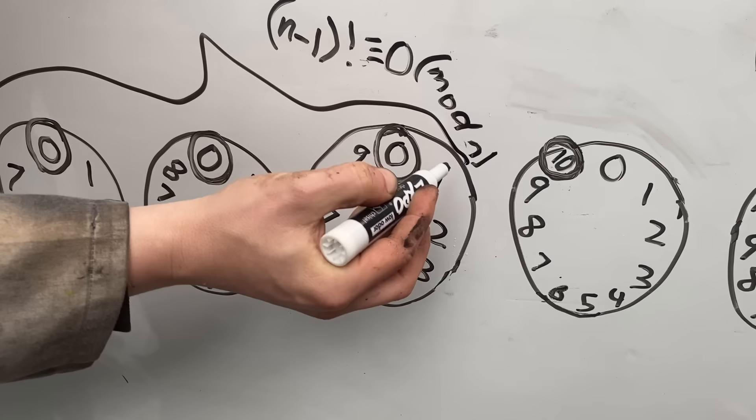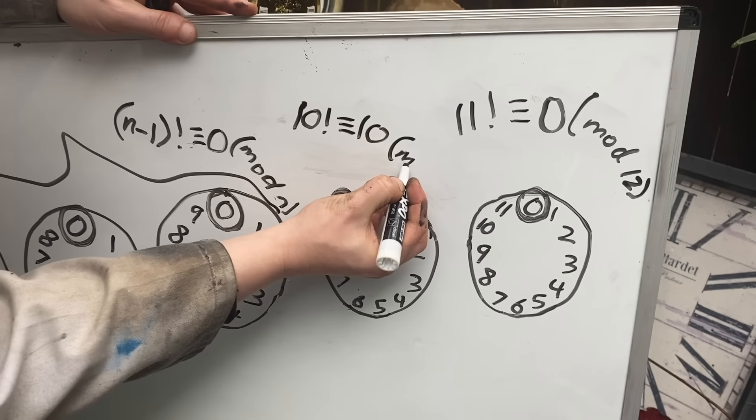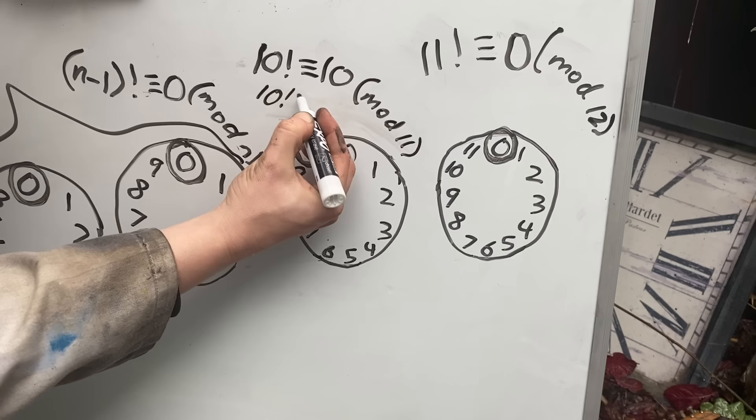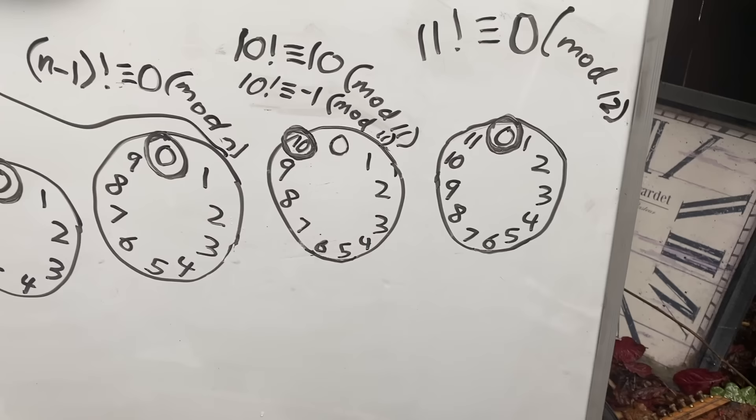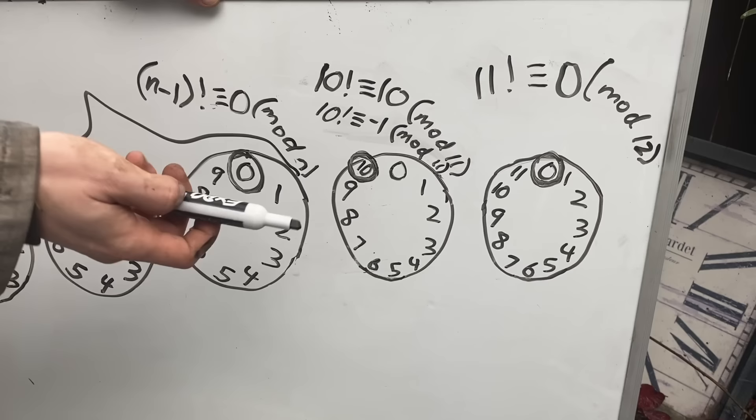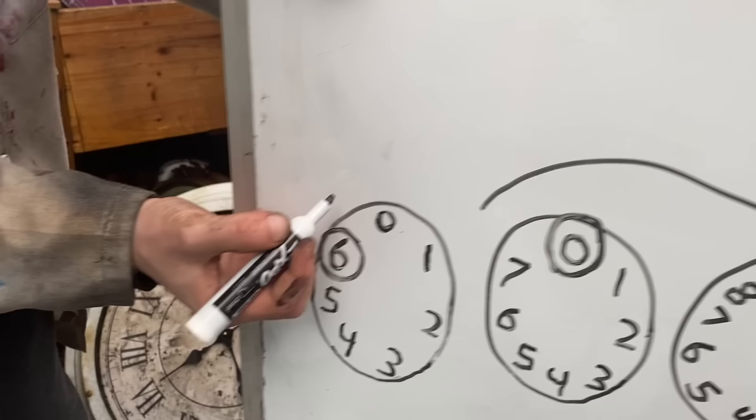But on this one here, we found that 10 factorial was congruent to 10 in mod 11. And we could also write that as 10 factorial is congruent to negative 1 in that mod. Because in mod 11, negative 1 is sort of like a counterclockwise tick from zero, the number that falls one before the mod number.